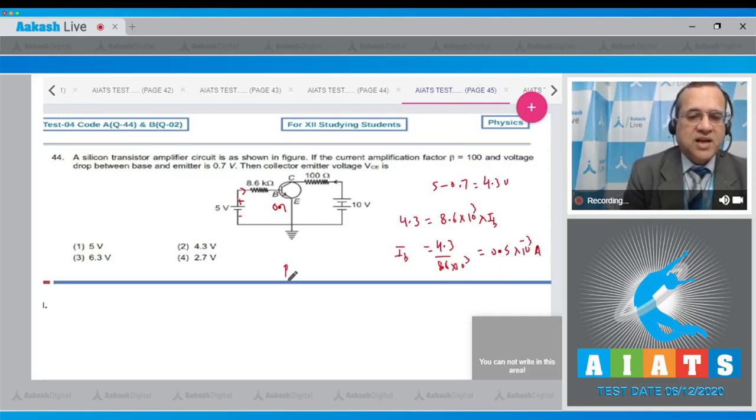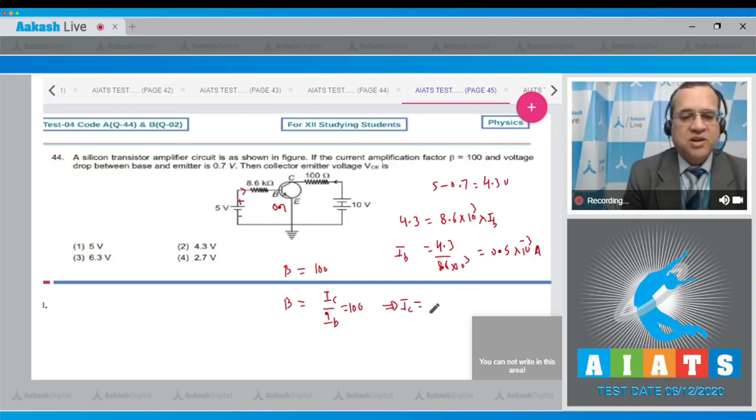Now given that the amplification factor beta equals 100. Therefore beta, which equals IC upon IB, is equal to 100. I can find out IC. IC equals IB, which is 0.5 times 10^-3 multiplied by 100. So this becomes equal to 50 milliampere.